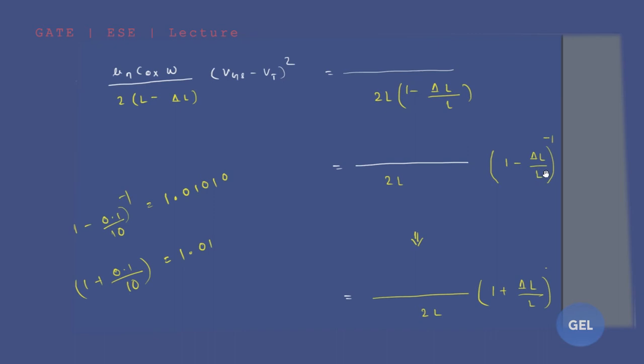Now, (1 − ΔL/L) to the power of minus one is approximately equal to (1 + ΔL/L). This is because ΔL is a very small change in length, so this approximation holds — you can verify this with a calculator and see these two values come out equal.